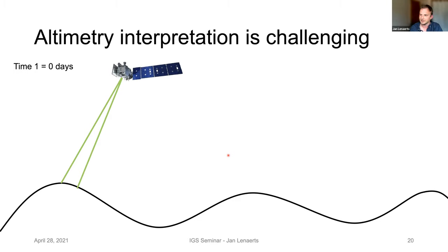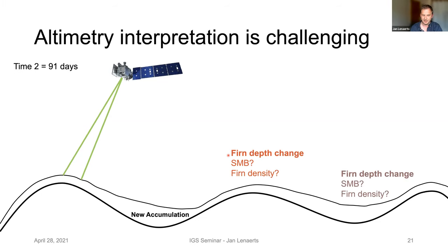ICESat-2 in particular gives us a unique view of the ice sheet interior because it's such high resolution both in space and time — it covers the same area every 91 days. Assume we have an ICESat-2 satellite flying over this topographically rough area and we measure two surface heights at time one and time two, 90 days afterwards. We will see a change in surface height which, in absence of a lot of dynamics in the ice sheet interior, we can ascribe to SMB processes only. But the problem is we know how the firn depth is changing in one location, but we don't really know what the surface mass balance is.